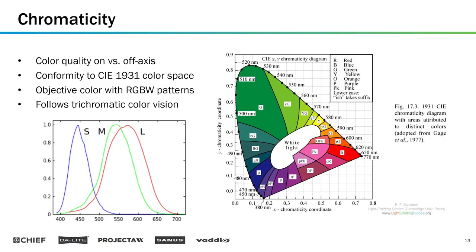This type of system follows trichromatic color vision. Trichromatic color vision is a type of vision that we have as humans — we are able to see three different colors at the same time, which allows us to discern different colors throughout the entire spectrum. Other animals have two colors, some animals have four colors, but humans can distinguish three colors at one time, which when combined together produces all the colors we're able to see.